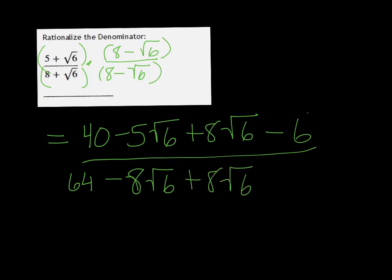Root 6 times root 6 again: 1 positive, 1 negative will be minus 6. So you see in the middle here we have 1 plus and 1 negative of the same, so those are going to cancel out.